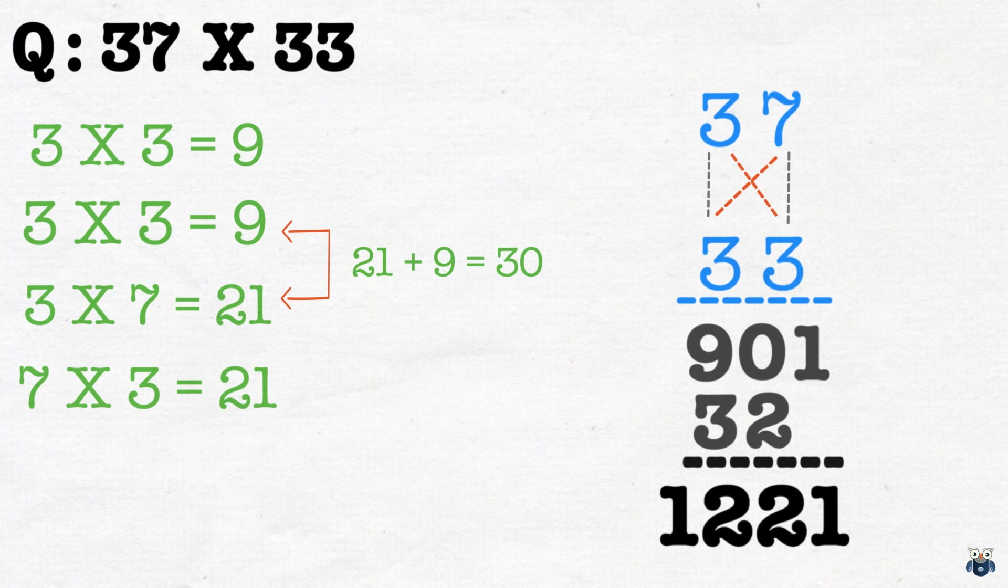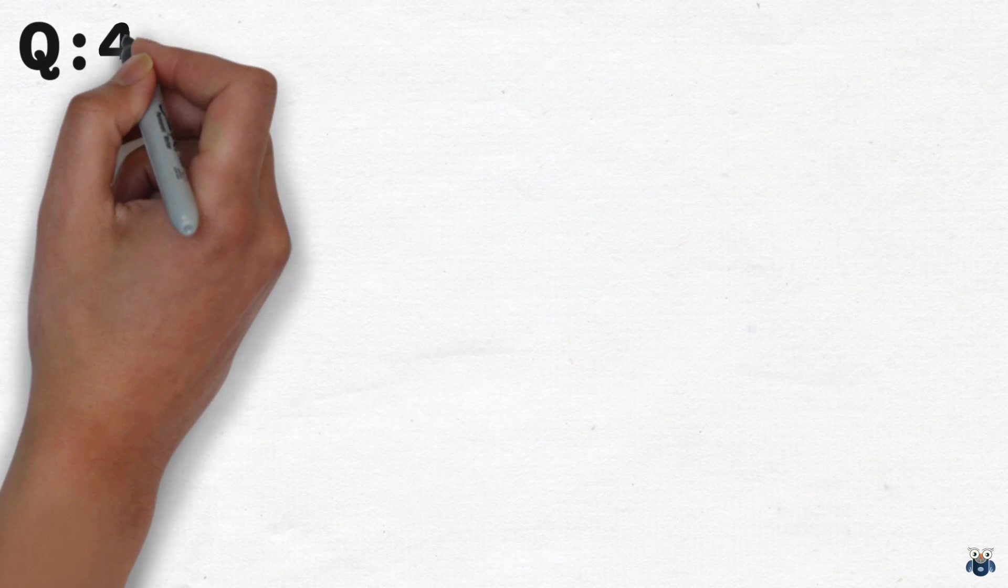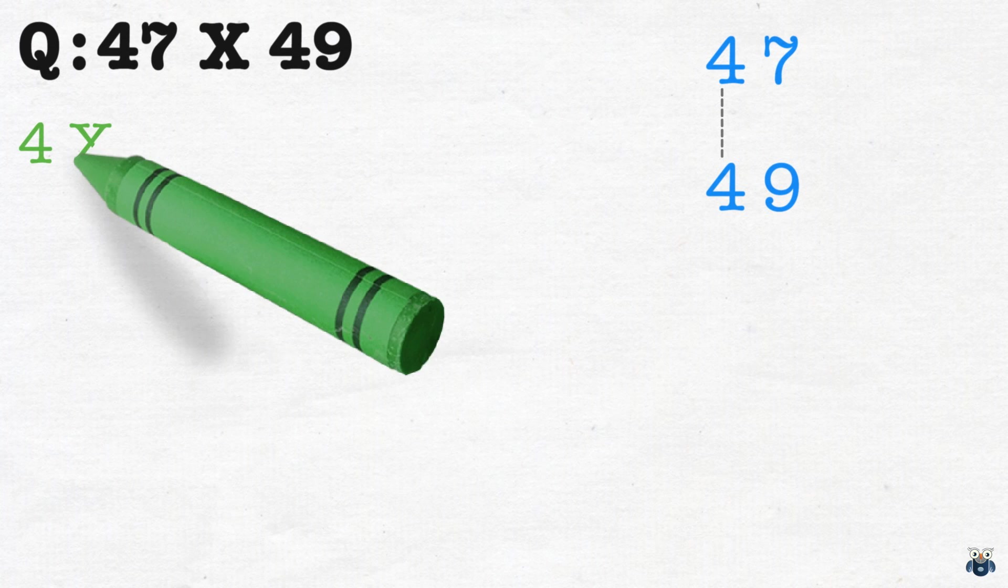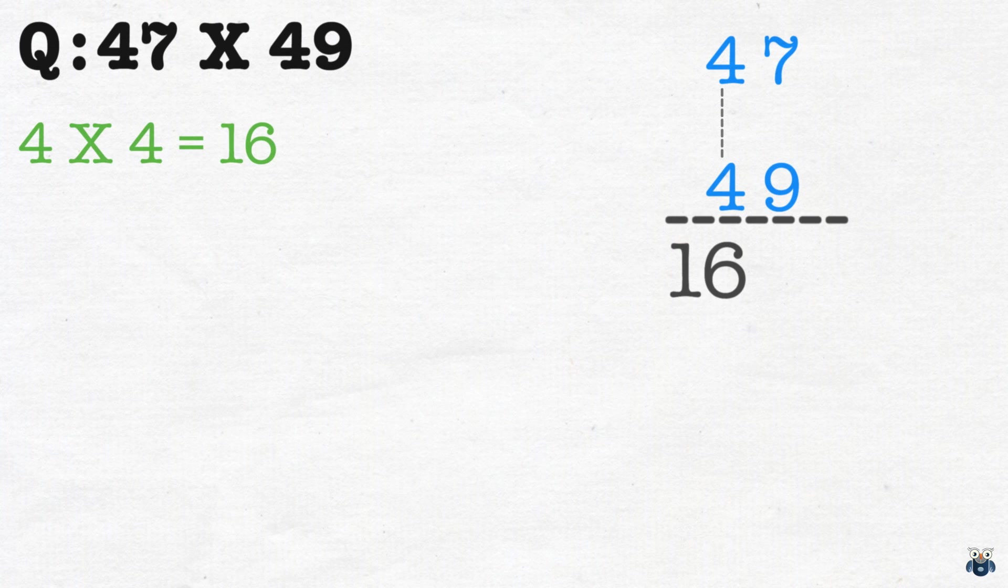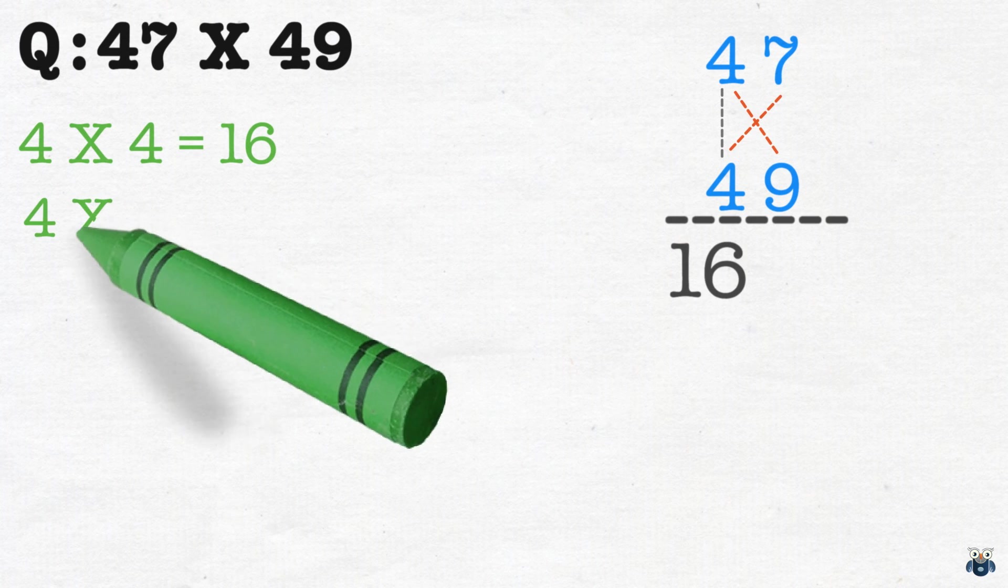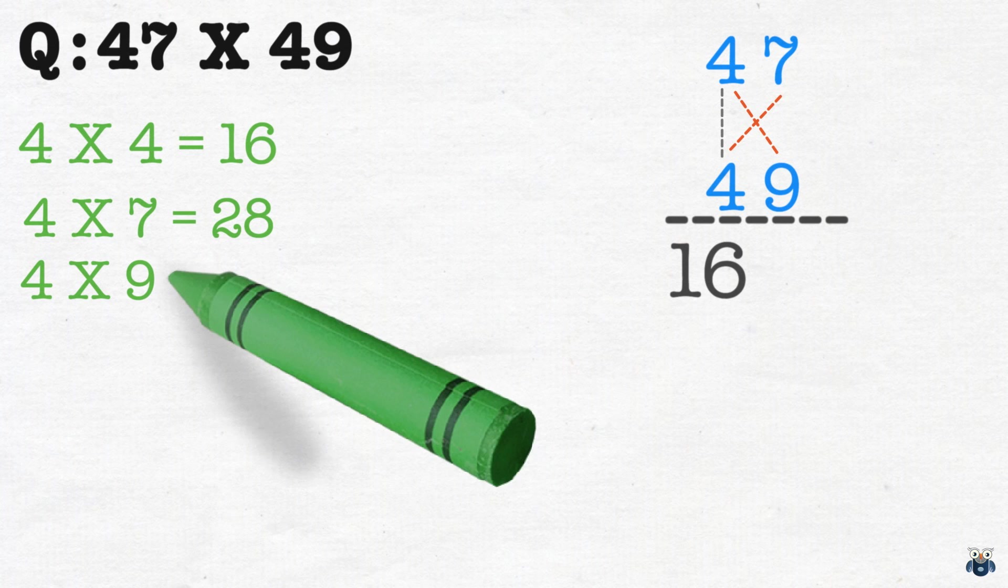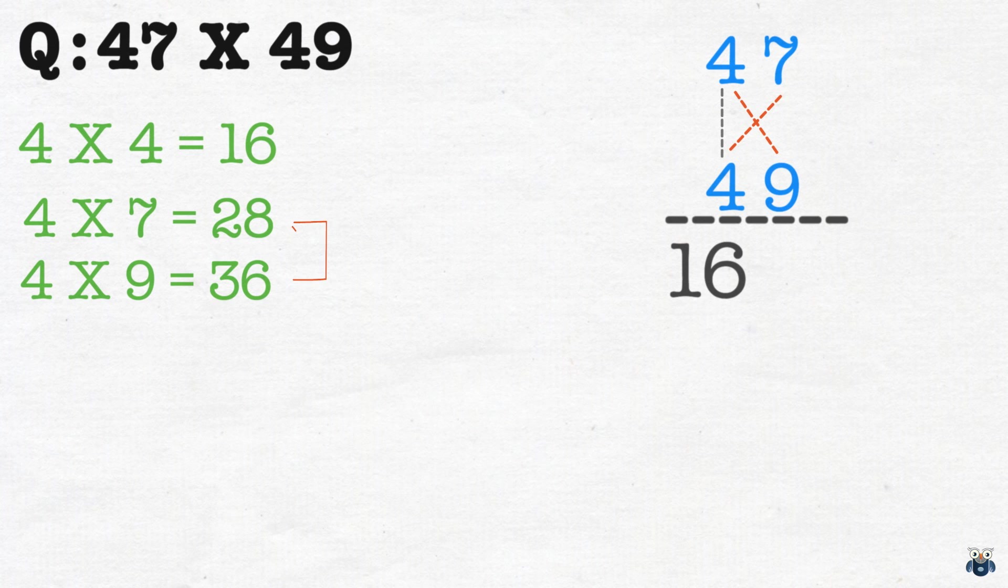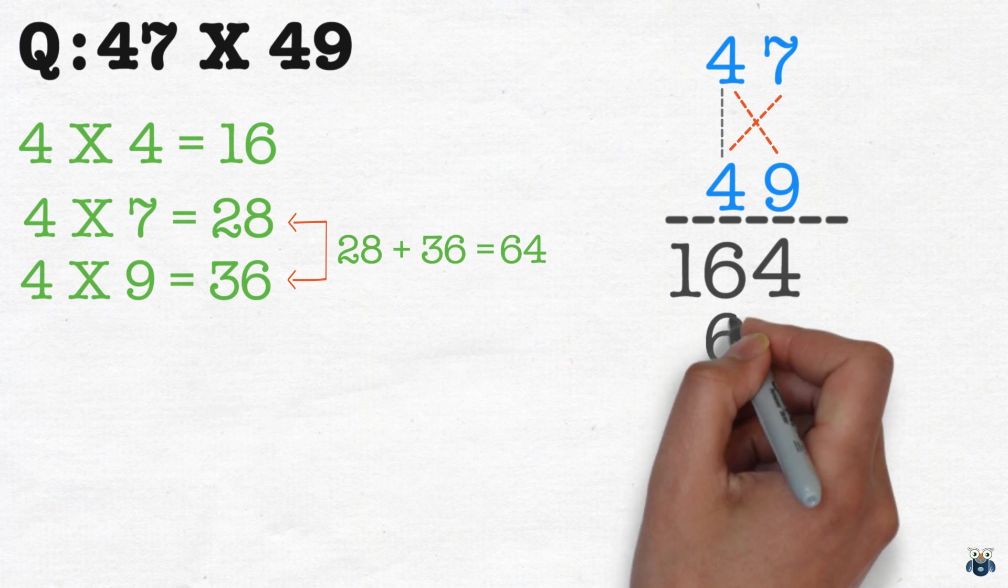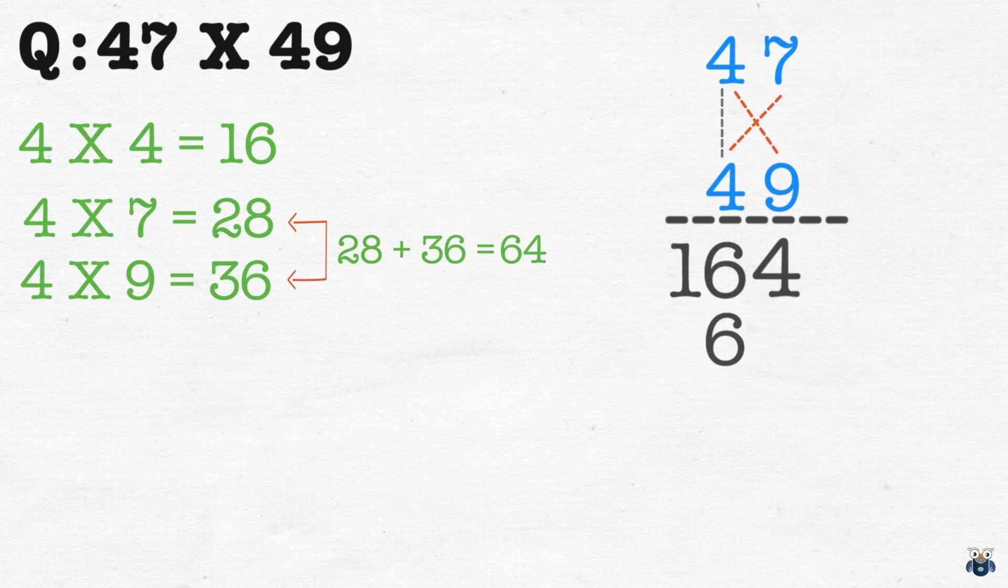Let's attempt one last 2-digit multiplication problem. What is 47 times 49? We first multiply the leftmost digits. 4 times 4 is 16. We then cross multiply. 4 times 7 is 28 and 4 times 9 is 36. Adding both results, we get 36 plus 28 which is 64. We write down the 4 and carry over the 6.